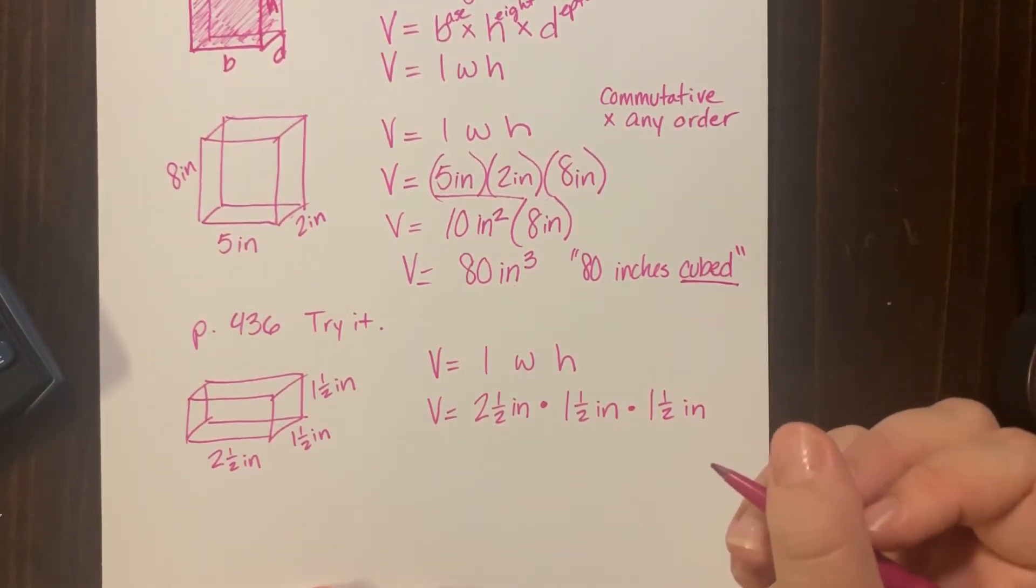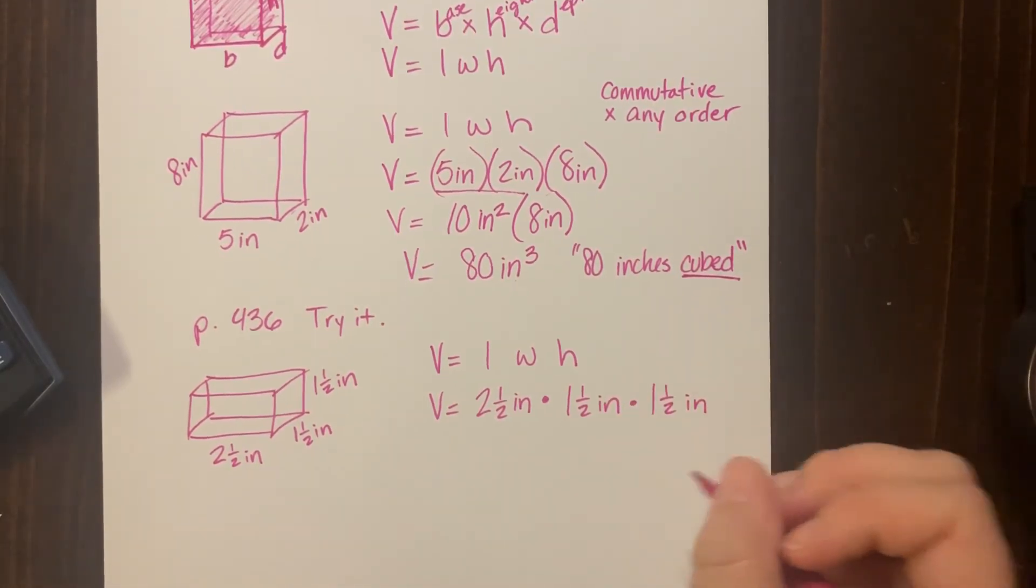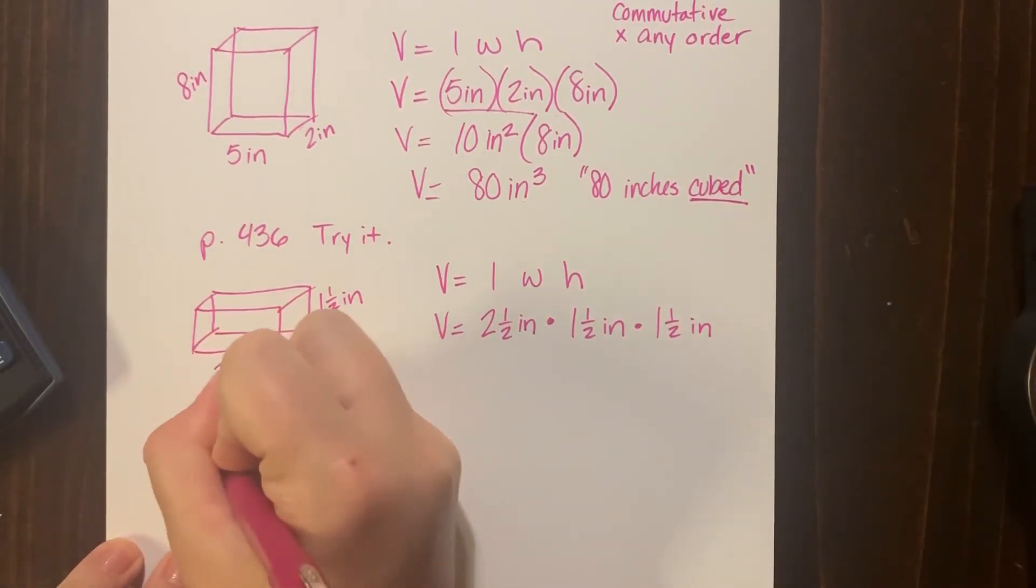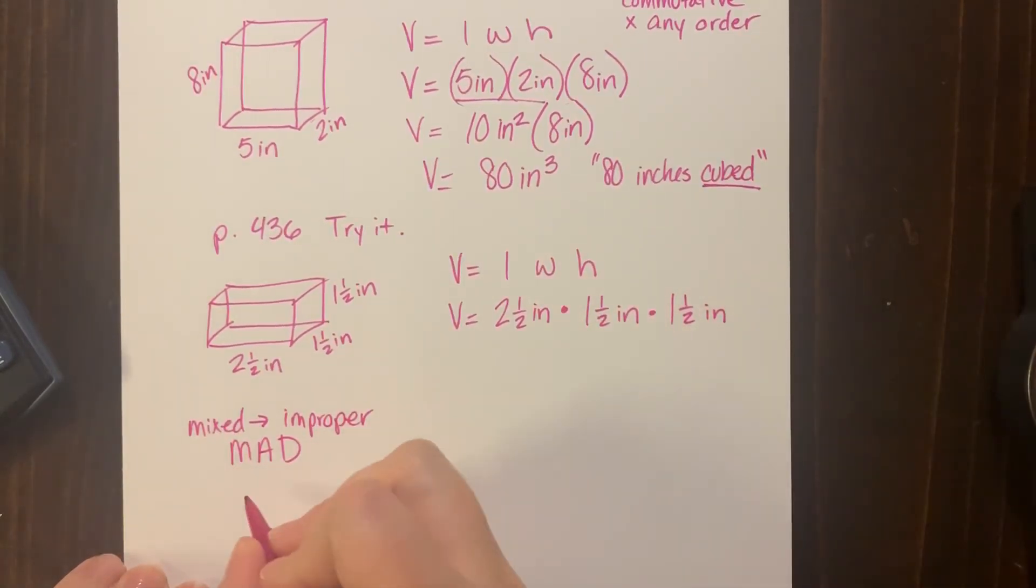So to convert a mixed number—we've done this before—mixed to improper, we're going to use MAD: multiply, add, keep the denominator. So I'm going to work two and a half over here so you can see.